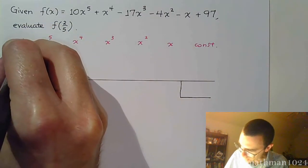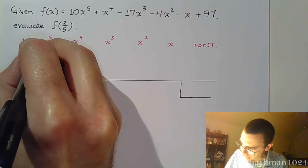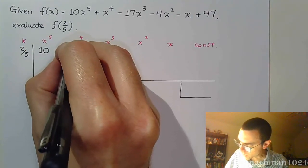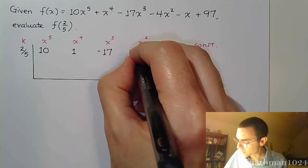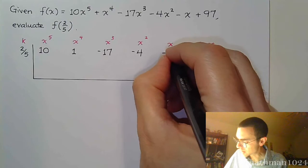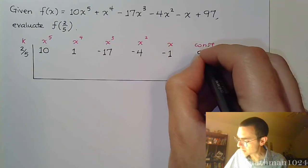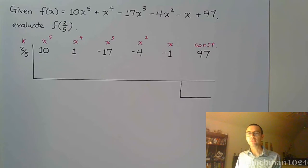Alright, so a k value of 2 over 5, copy down these coefficients, 10x to the 5th, that's 1x to the 4th, minus 17x to the 3rd, minus 4x squared, minus 1, and a positive 97.